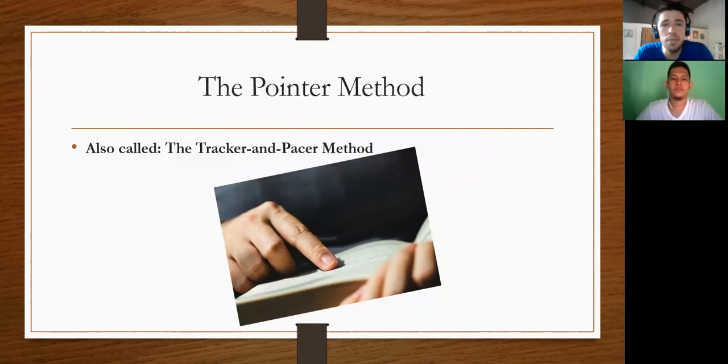Now we have the pointer method. It has a lot of names like hand-pacing, the tracker and pacer method, and the meta-guiding. A teacher from Utah claimed that Evelyn Wood claimed that she could read 2,700 words per minute using this method, just sweeping around her finger along with the lines she read. Also you can use a piece of paper and you draw it down by your reading. It helps you to not lose the line and also to keep focused on the reading. It has another variety like with a pen underline the line you're reading. But it is your choice and what also works for you.